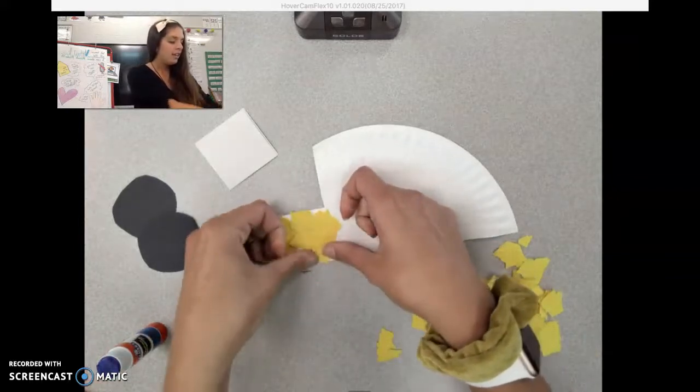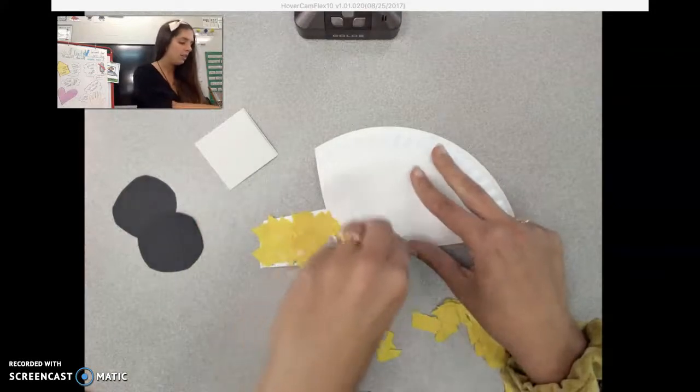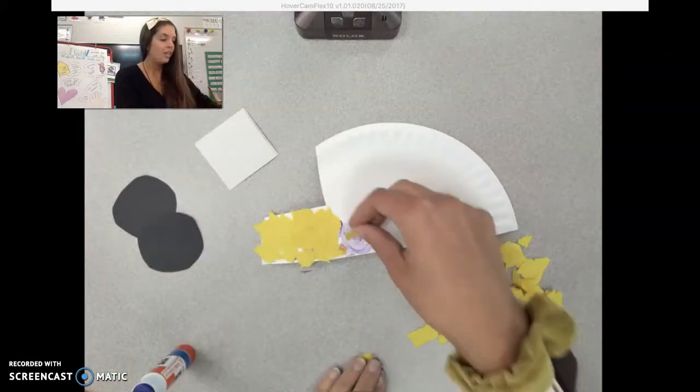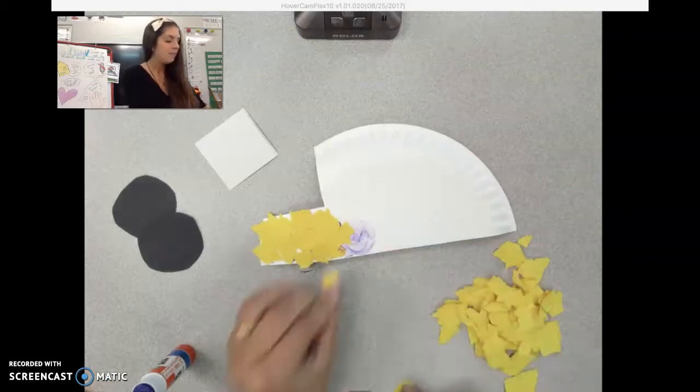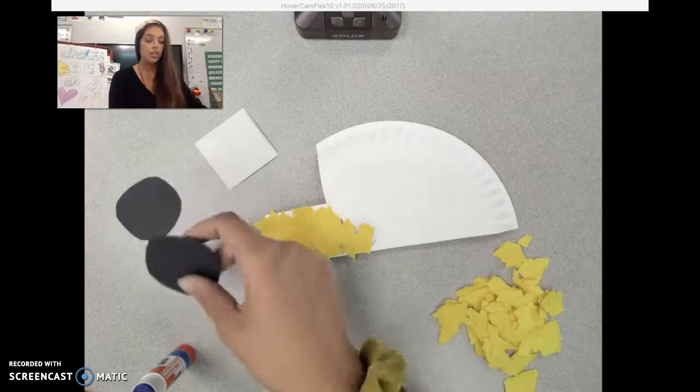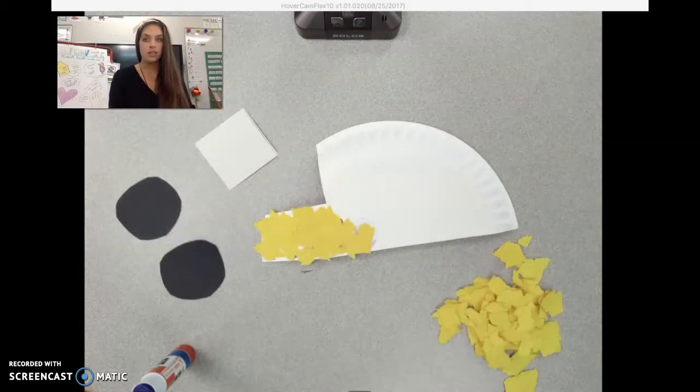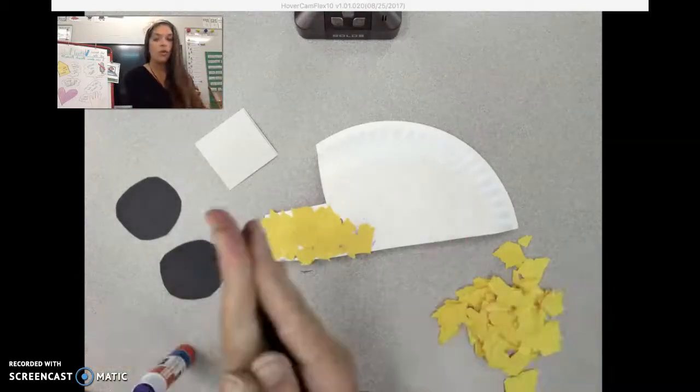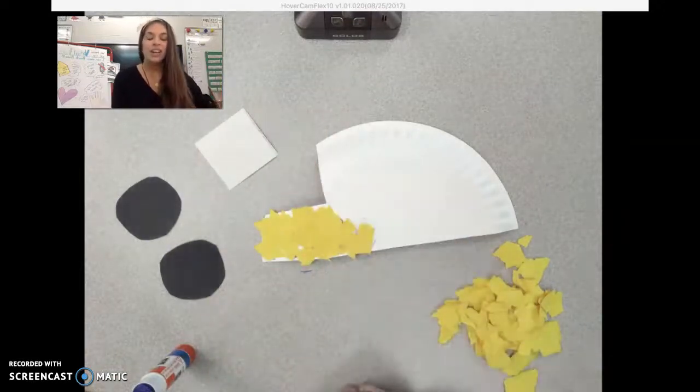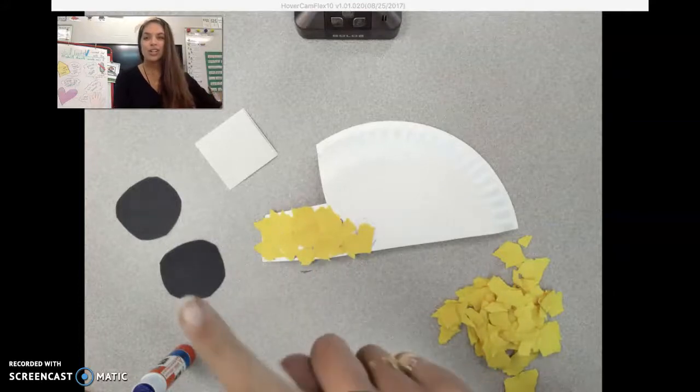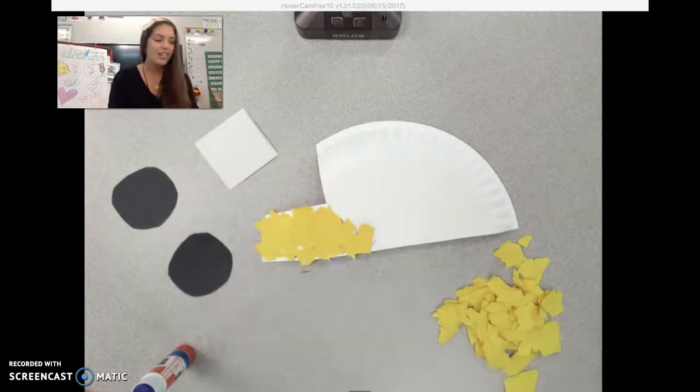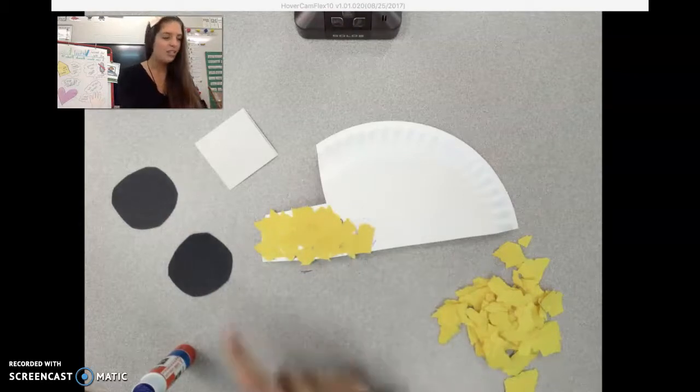Once we have that all filled, you are going to take out your black piece of paper and cut two circles for your wheels. If you want to fold the black piece of paper and then cut in a circle, you can. If you want to cut two circles, you sure can. See how these circles are a little bit different? This one is flat right here.